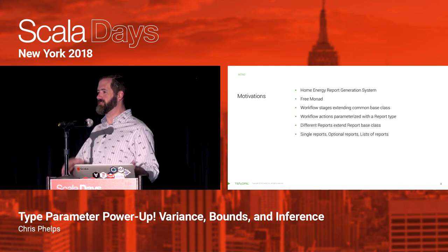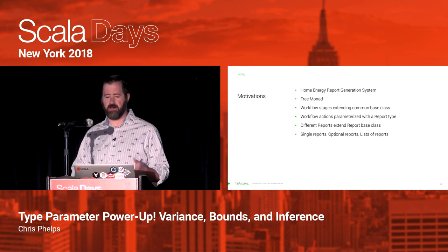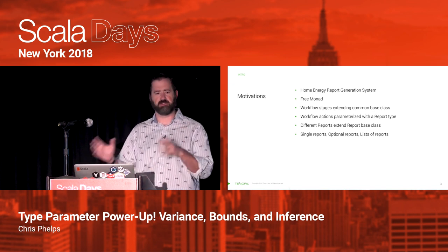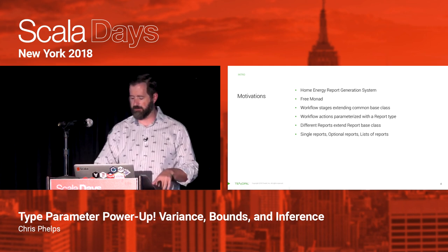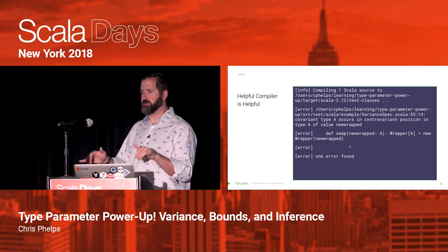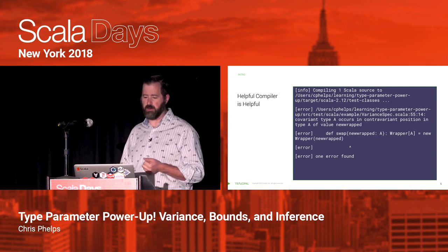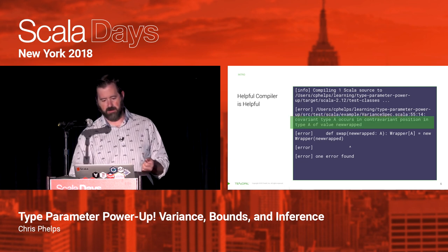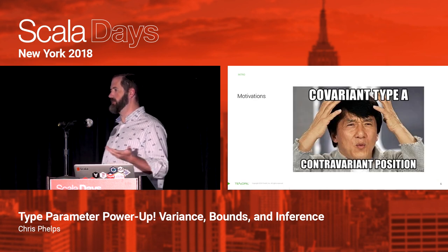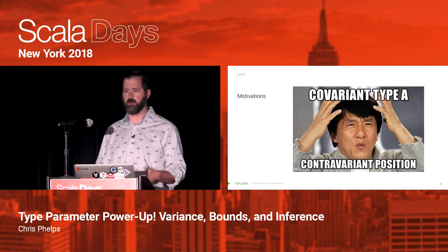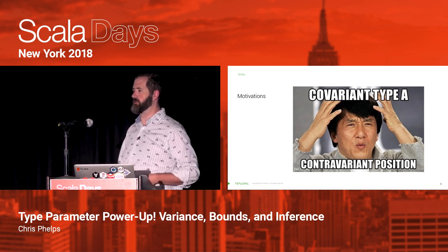They're parameterized with whatever type of report that you have. In our case, we had many different reports. So we have different reports that extend a base class — workflow stages with different reports. There's single reports, optional reports, list of reports, so lots and lots of nested type parameters. The Scala compiler is usually pretty good at helping us through this. We sometimes end up with some of these interesting cases where we try to swap this A wrapper, and the compiler tries to be helpful and tells us 'covariant type A occurs in contravariant position.' And my engineers were quite confused and asked, 'What the heck does this mean?' At first I couldn't give a good succinct answer. So once I was able to give them a good succinct answer, this was a good idea for a talk to propose.